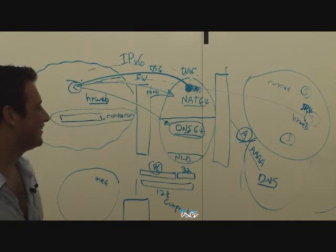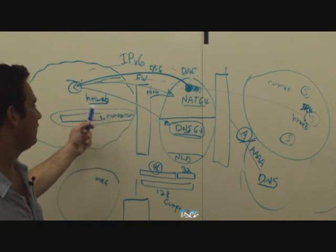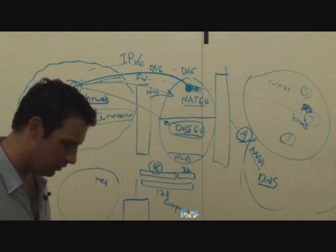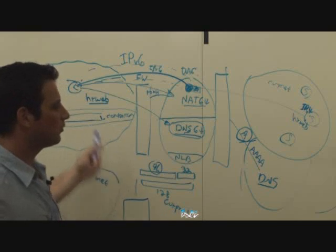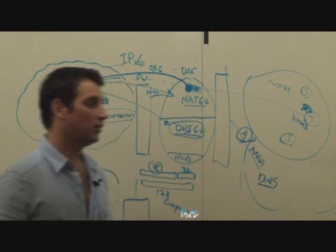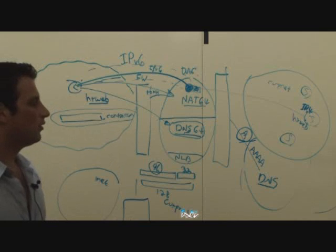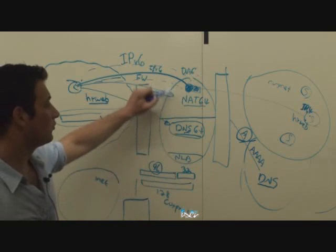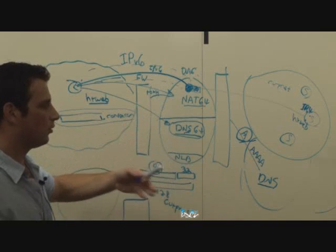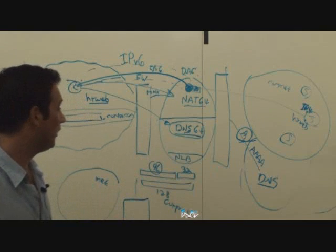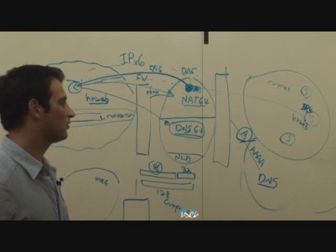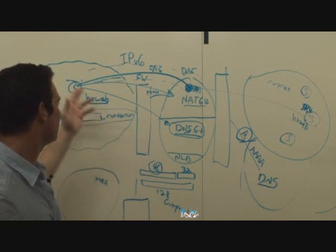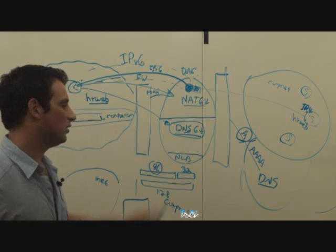A bit longer answer is that these configurations get to the client by means of group policy. So initially when the client was inside the corporate network, at the bootstrap process, it got a group policy configuration. That group policy configured it to connect to certain places — to Teredo — and gave it the IPsec configuration and also configured it with the right NRPT configuration. And that's the long answer of how your client knows how to connect to the DNS624.